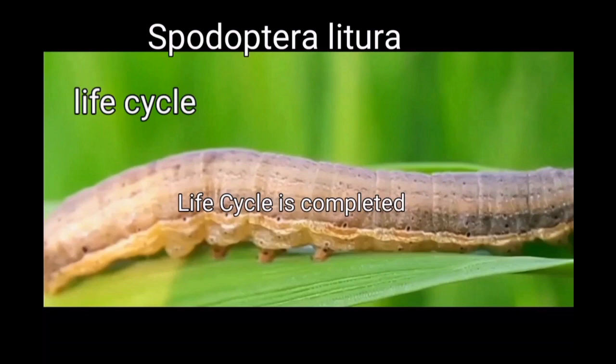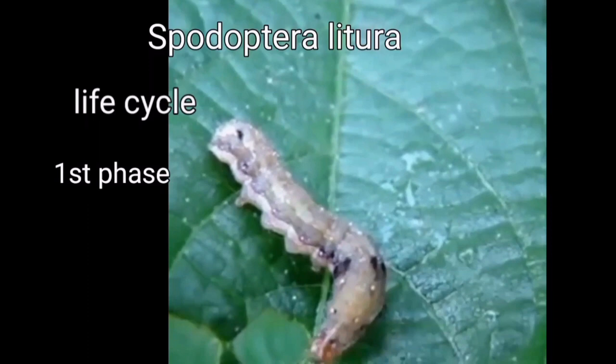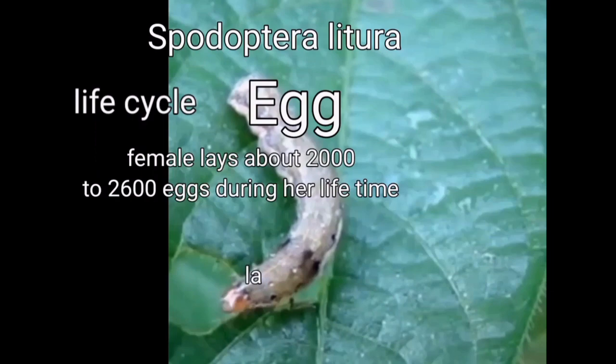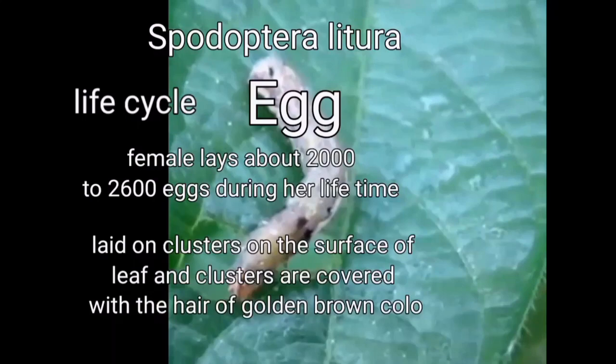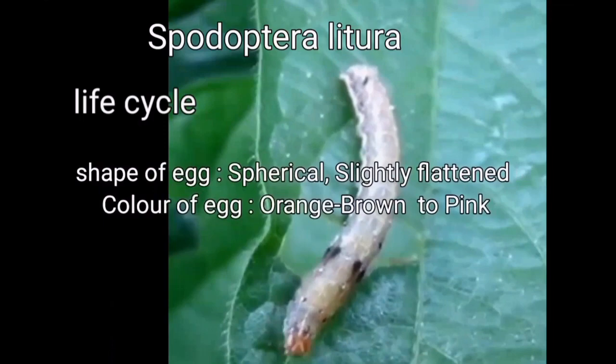The first phase of the life cycle is the egg stage. The female lays about 2,000 to 2,600 eggs during her lifetime. Eggs are laid in clusters on the surface of the leaf, and the egg clusters are covered with golden brown-colored hair. The shape of the egg is spherical, slightly flattened, and orange-brown to pink in color.